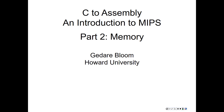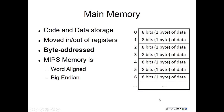Welcome to the second installment of the C2Assembly Introduction to MIPS. Main memory is one of the three components of a computer, and it's the component that stores the code and data for a program which the processor fetches and loads and stores in order to get data in and out of registers and to move instructions into the processor for execution.